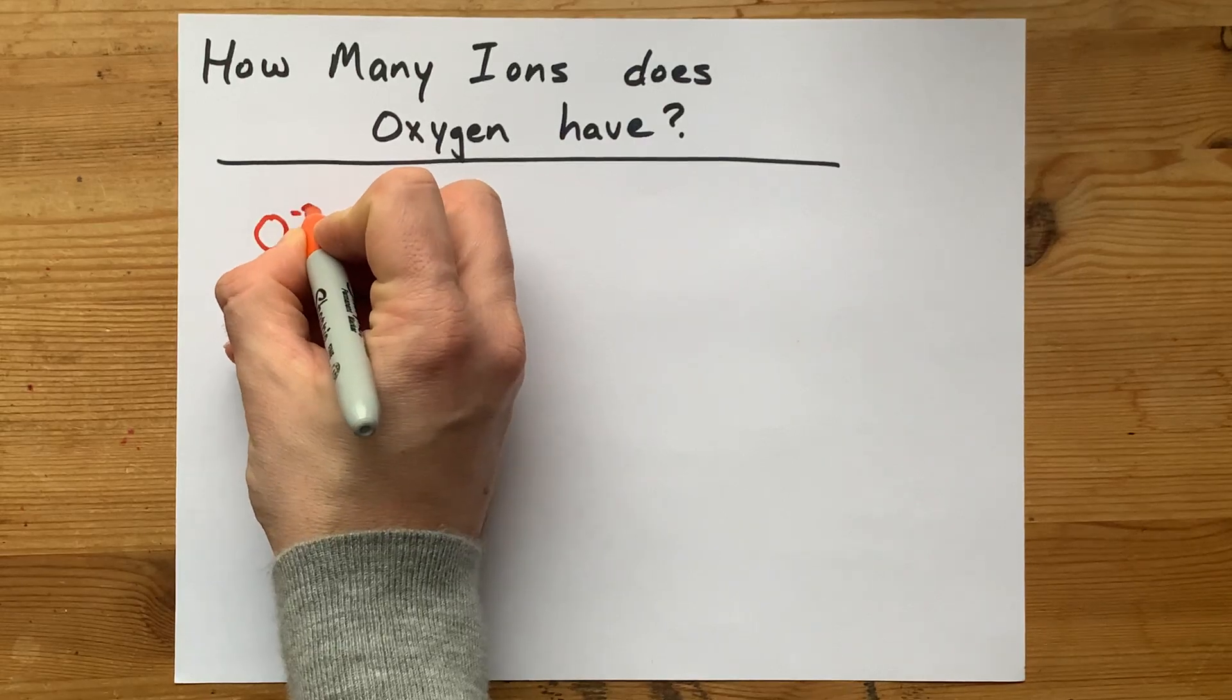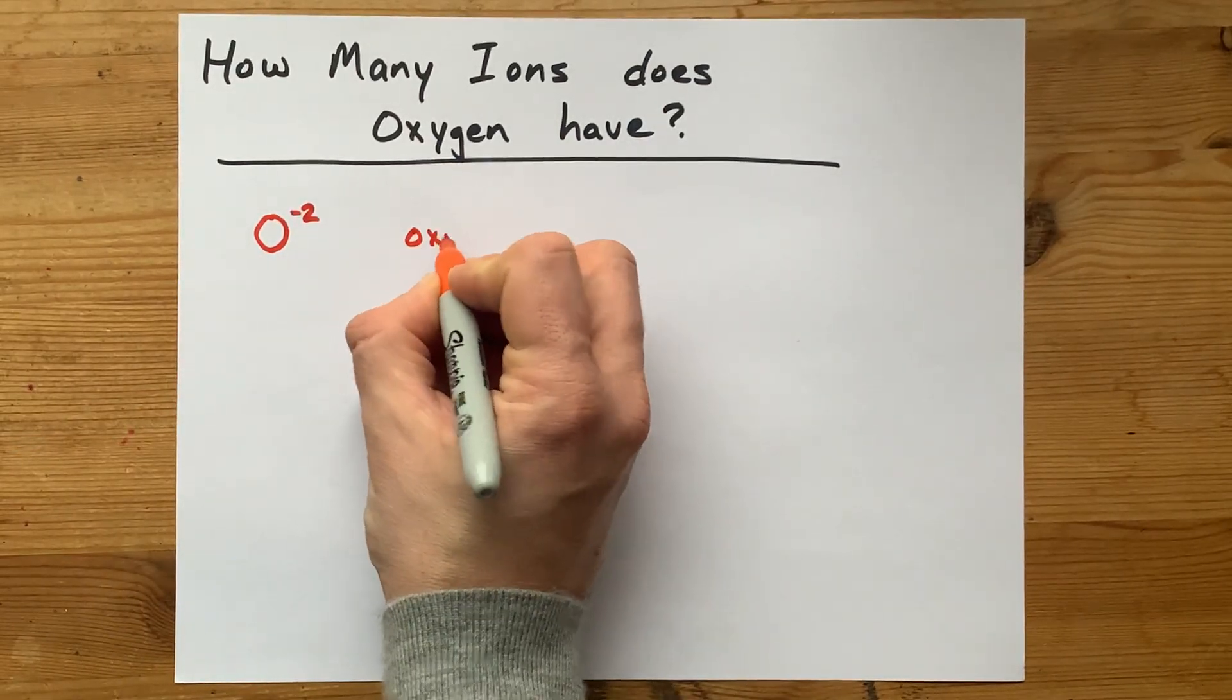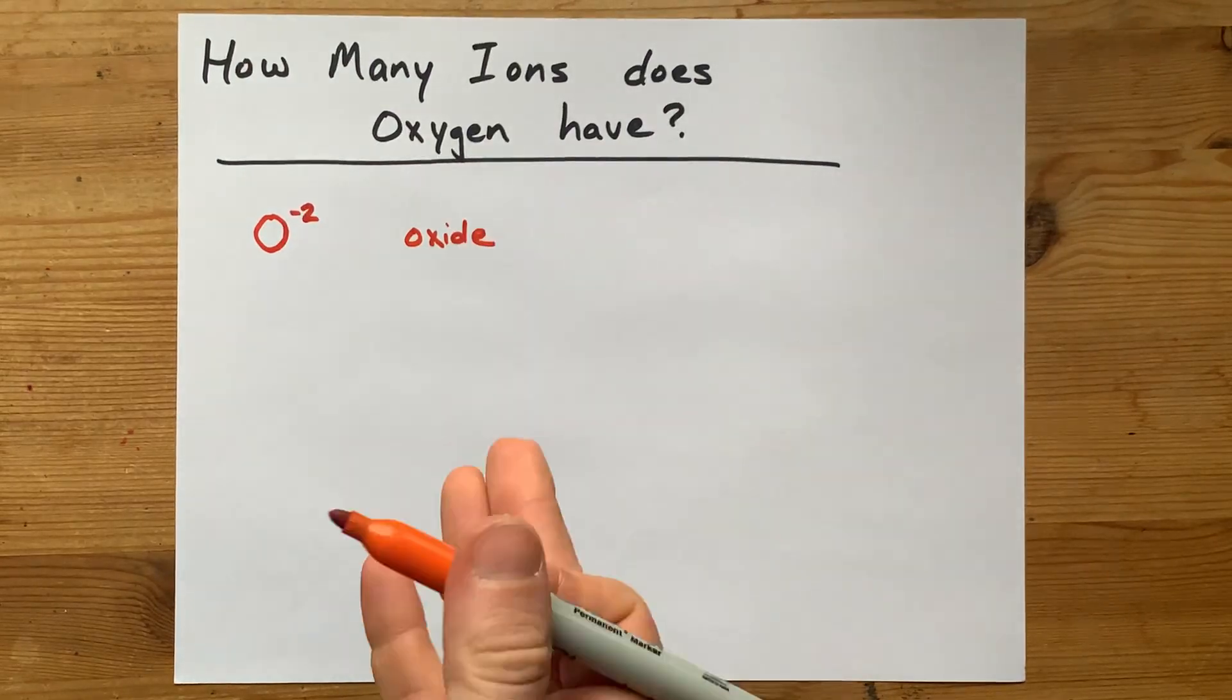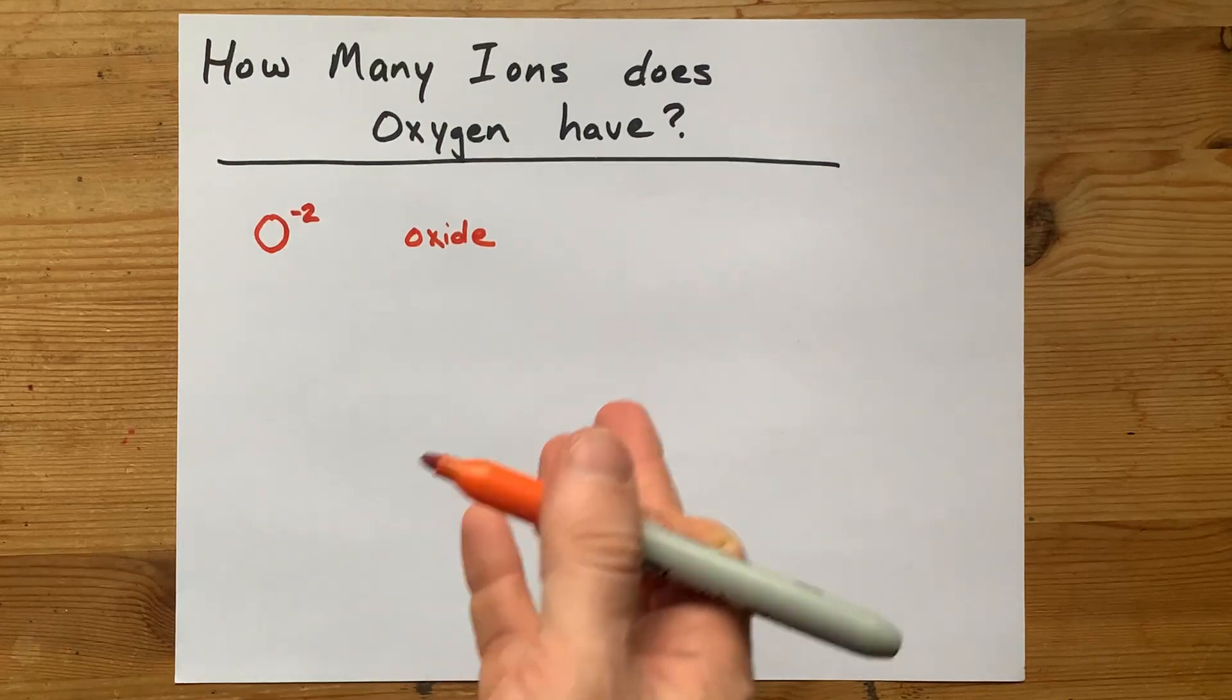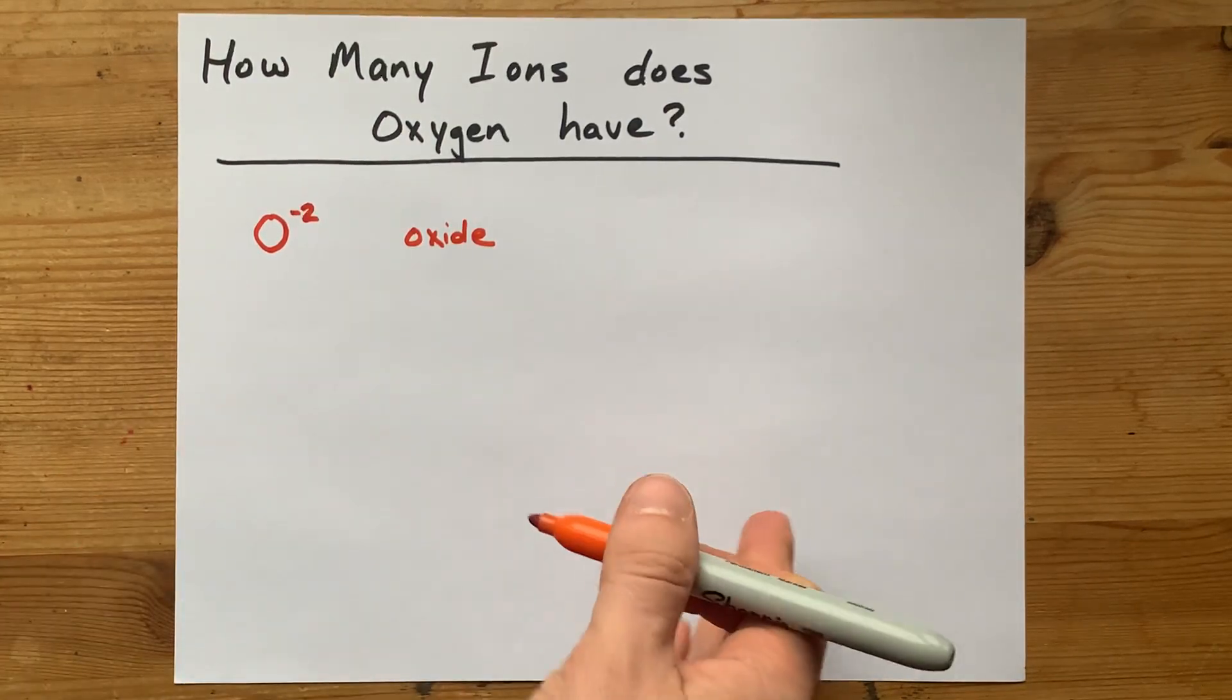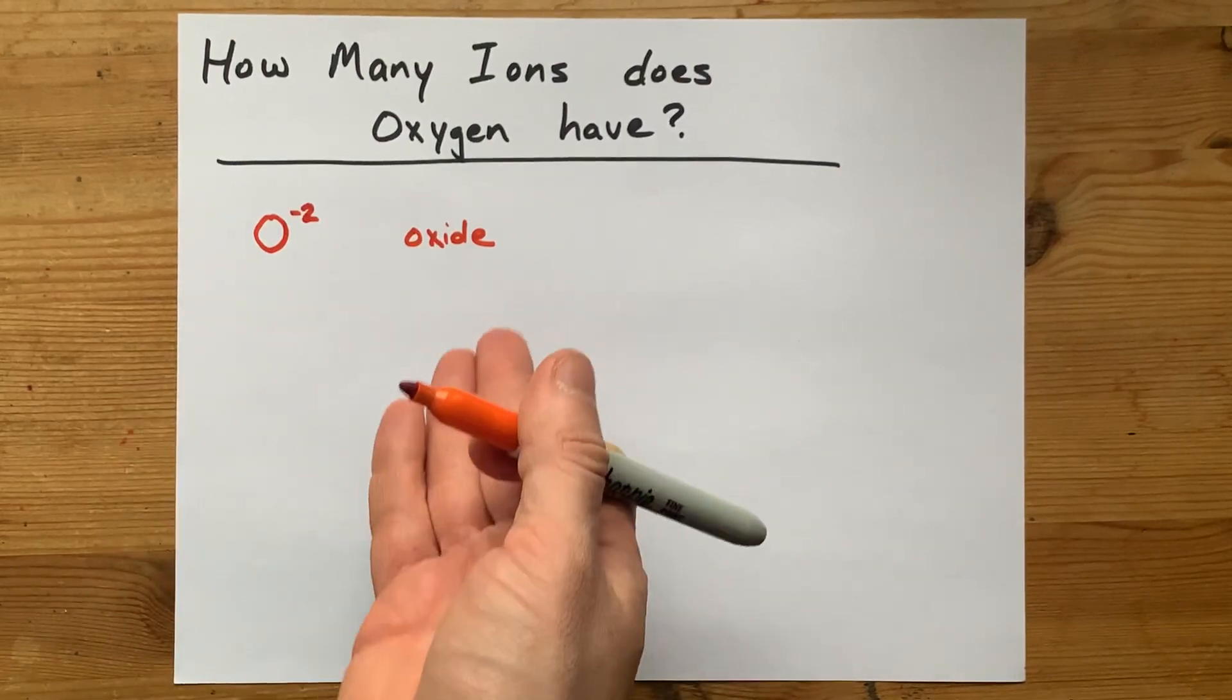And so the O²⁻ ion, when you see it in ionic compounds, is called just oxide. Nitrogen oxide, it's not a good example. Sodium oxide, calcium oxide. If you're putting a metal with oxygen, it's probably going to be an oxide.